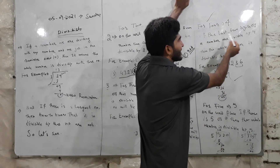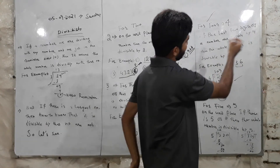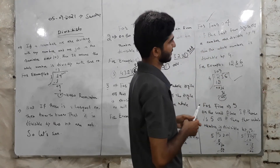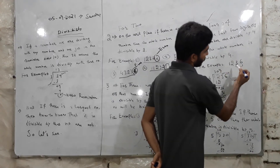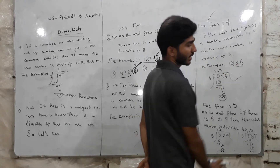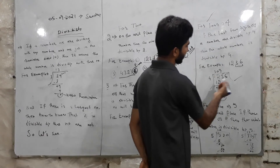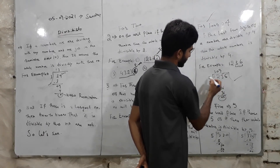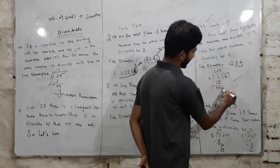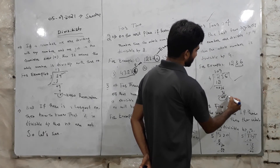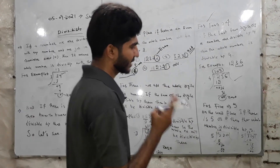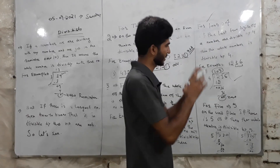For divisibility by 4, if the last 2 digits of a number are divisible by 4, then the whole number is divisible by 4. The last 2 digits refer to the units and tens place. For example, 1234: the last 2 digits are 34. 4 times 9 is 36, remainder 0, so 1234 is divisible by 4.